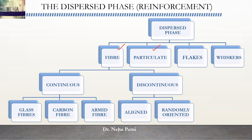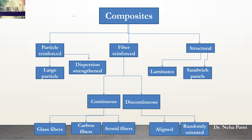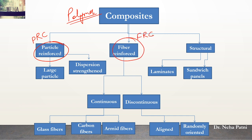Polymer composite can be classified based on how the reinforcing is done. If reinforcing is done with particles, it is known as particle reinforced composite. If the reinforcing is done with fiber, it is known as fiber reinforced composite. If the reinforcing is done in the form of sheets where entire sheets are reinforced, it is known as structural composite. This is the classification of polymer composite: particle reinforced, fiber reinforced, and structural composite.